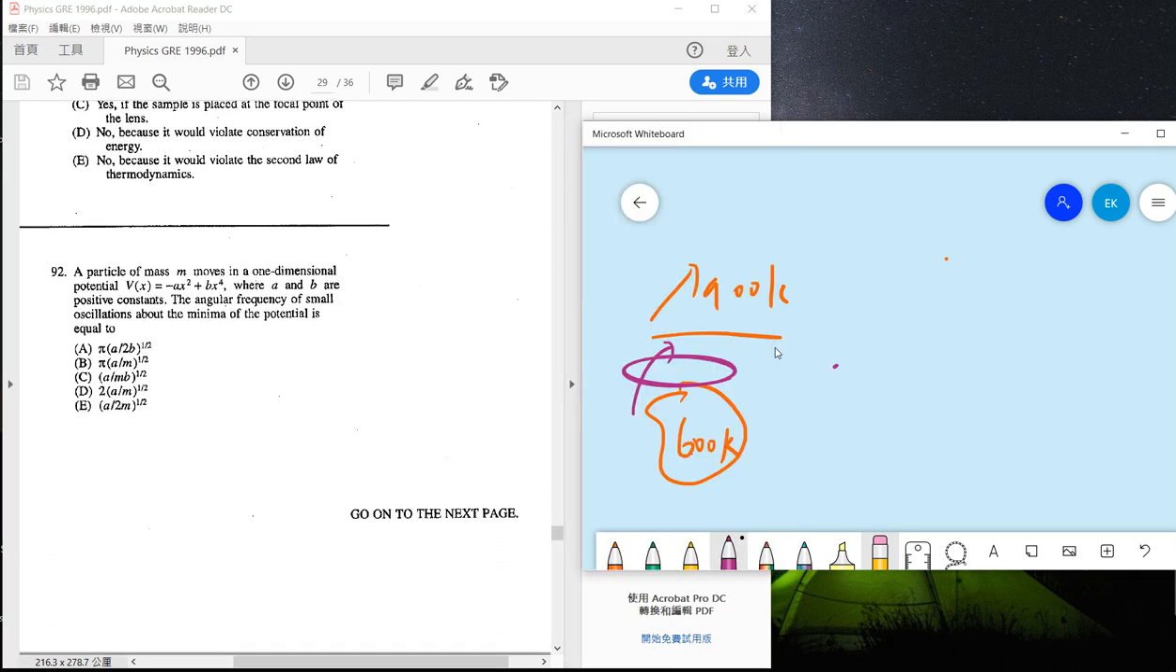Because the temperature always flows from highest to lowest, so there's no way that you can use the lowest temperature object to get a higher temperature. Okay, problem 62, so 62 is also a special question which I think is interesting.